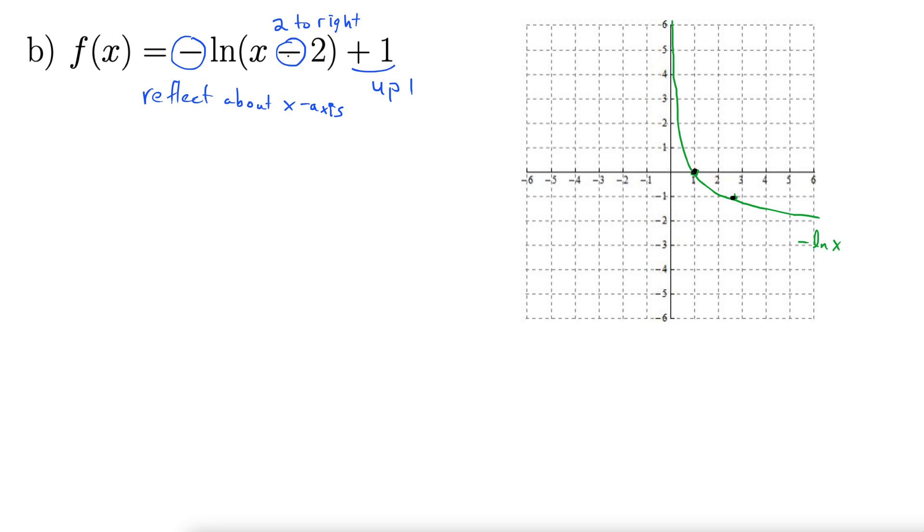Here we are, so I'm going to take these points. I'm going to move them two to the right and one up. Two to the right and one up. Two to the right, so this is 2.7, 3.7, 4.7 and one up. There we go.